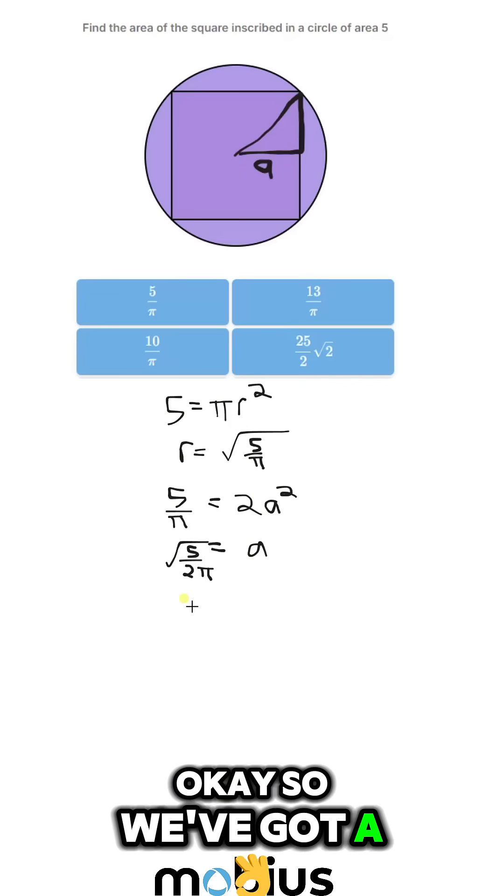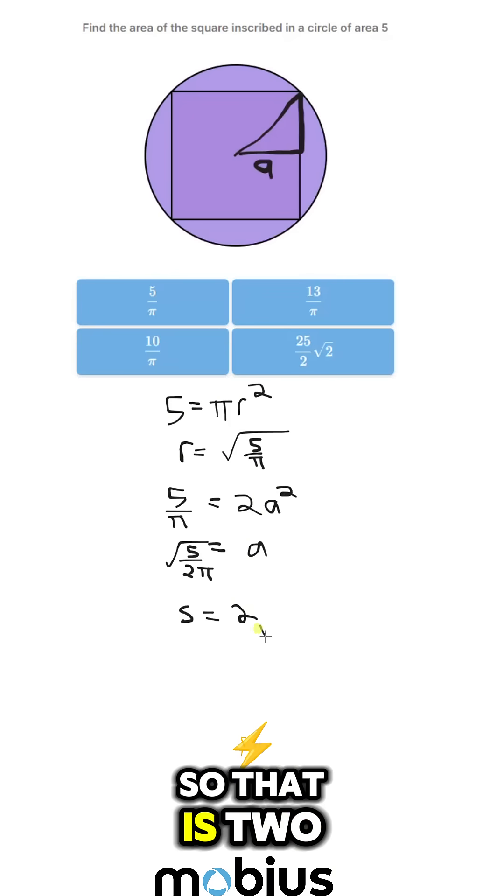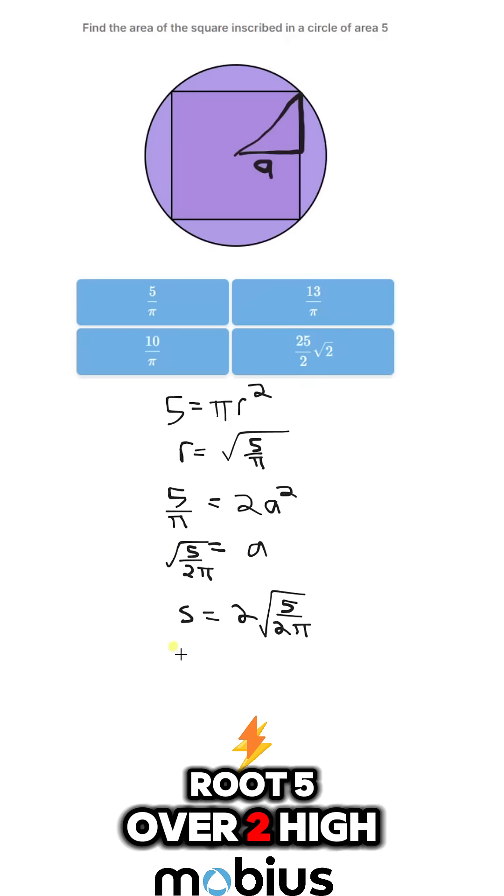Okay, so we've got a, the side of our square. s is equal to 2a. So that is 2 root 5 over 2 pi.